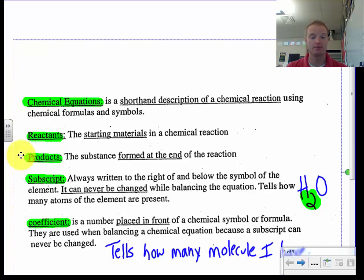Then you have your products. That's the substance that is formed at the end of the reaction. So that's on the right hand side. I always think of products, when you multiply two numbers together your answer is a product. It's what you end up with.